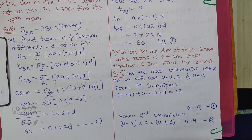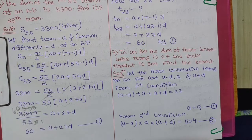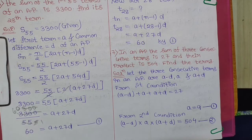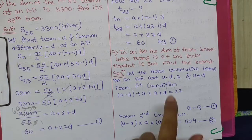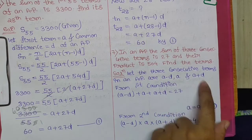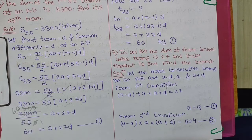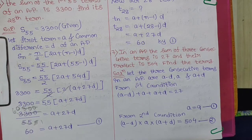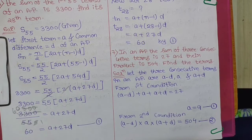Question 7 is quite different. Whenever the question involves 3 consecutive terms of an AP, you should assume those terms as (A − D), A, and (A + D). This approach will be used for questions 7, 8, and 9 — for 3 consecutive, 4 consecutive, and 5 consecutive terms respectively.